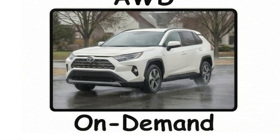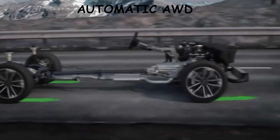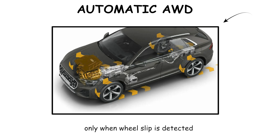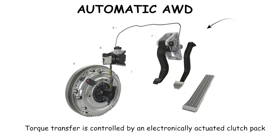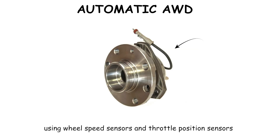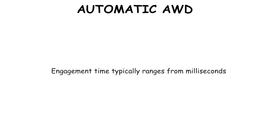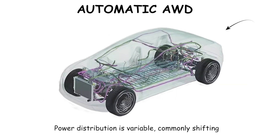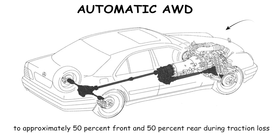Automatic All-Wheel Drive on-demand systems use a primary front-wheel drive or rear-wheel drive layout and electronically engage the secondary axle only when wheel slip is detected. Torque transfer is controlled by an electronically actuated clutch pack in the power transfer unit using wheel speed sensors and throttle position sensors. Engagement time typically ranges from milliseconds to fractions of a second based on software calibration. Power distribution is variable, commonly shifting from 100% front-wheel drive to approximately 50% front and 50% rear during traction loss.